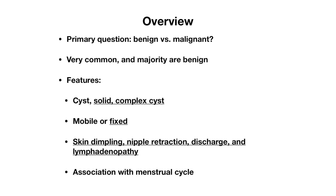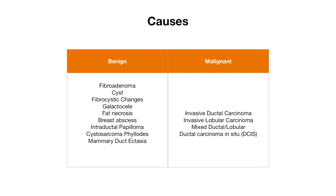They can be associated with other changes such as skin dimpling, nipple retraction, discharge, or lymphadenopathy primarily in the axillary region, and they can also be associated with a woman's menstrual cycle. There are both benign and malignant causes of breast lumps, and we will go over each one of the benign causes because those tend to be some of the more high yield ones that you'll be tested on.